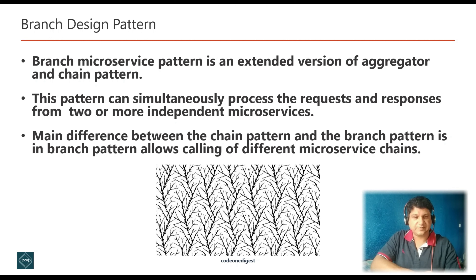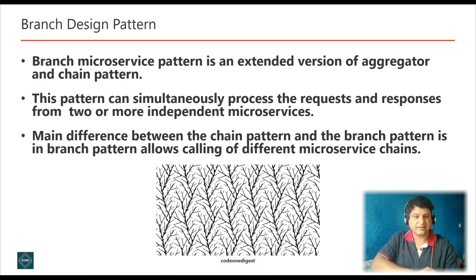Branch microservice design pattern allows you to simultaneously process the request and response from two or more independent microservices. The main difference between the chain pattern and branch pattern is the calling of different microservice chains. Unlike the chain design pattern, the request is not passed in a sequence, but is passed to two or more mutually exclusive microservice chains. This design pattern extends the aggregator design pattern and provides the flexibility to produce responses from multiple chains or a single chain.